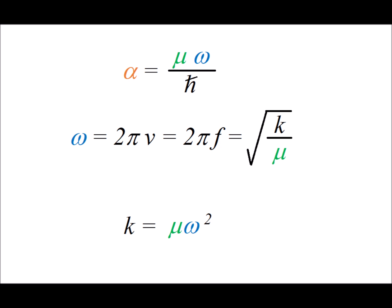The quantity alpha is equal to mu, the reduced mass, times omega, the angular frequency, divided by h-bar. The angular frequency omega is equal to 2 pi times nu, which is the same thing as 2 pi times the frequency, and this is equal to the square root of k, the force constant, divided by mu, the reduced mass. By manipulating the second equation, we get an expression for the force constant k is equal to mu times omega squared.